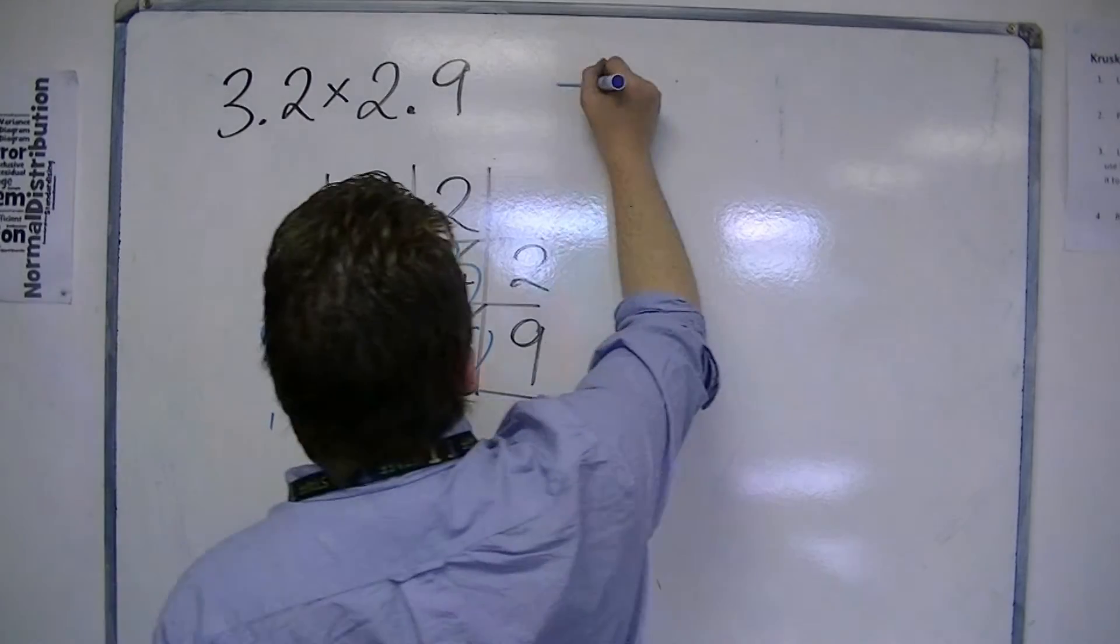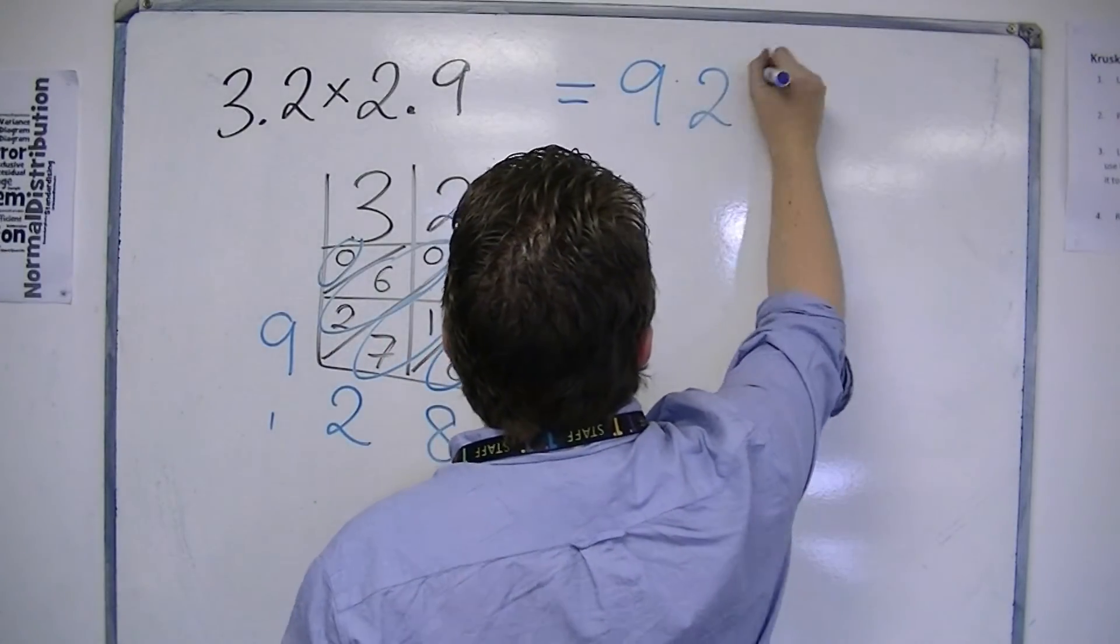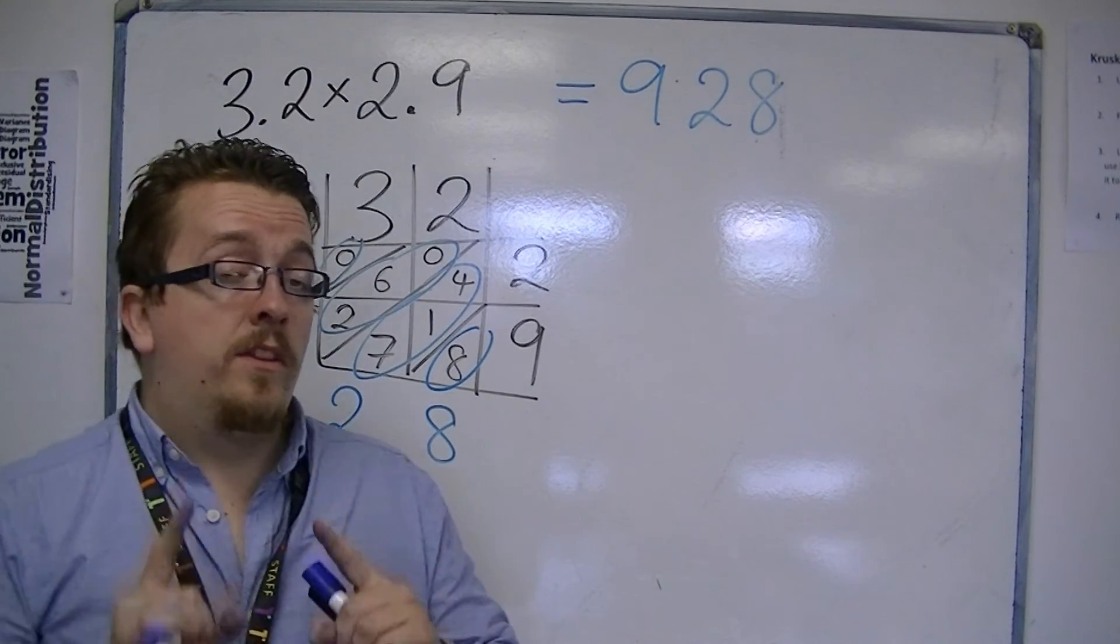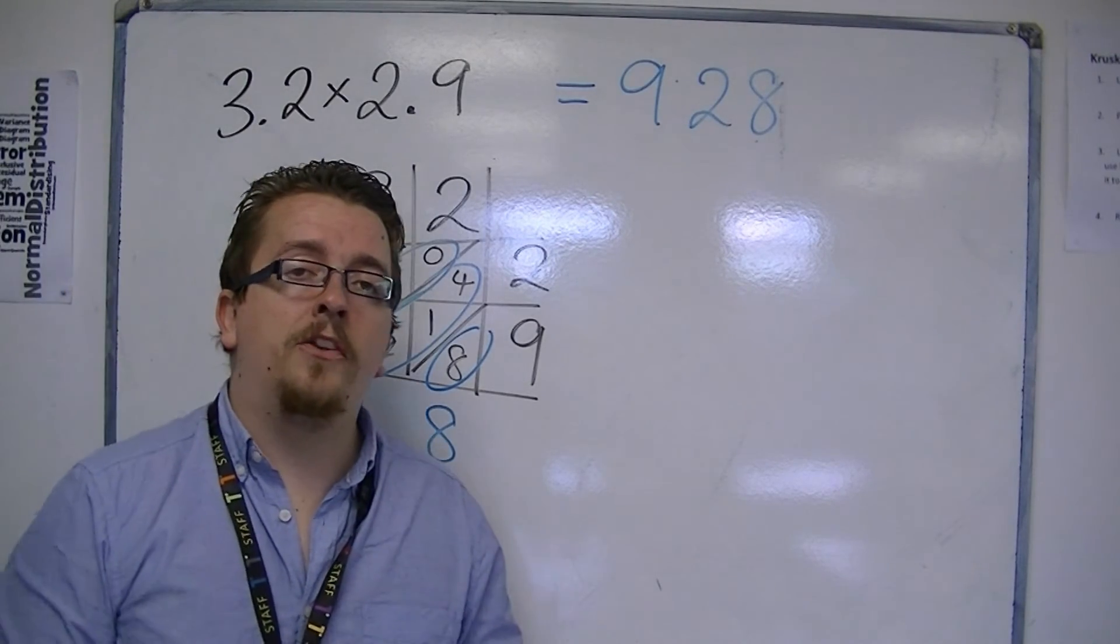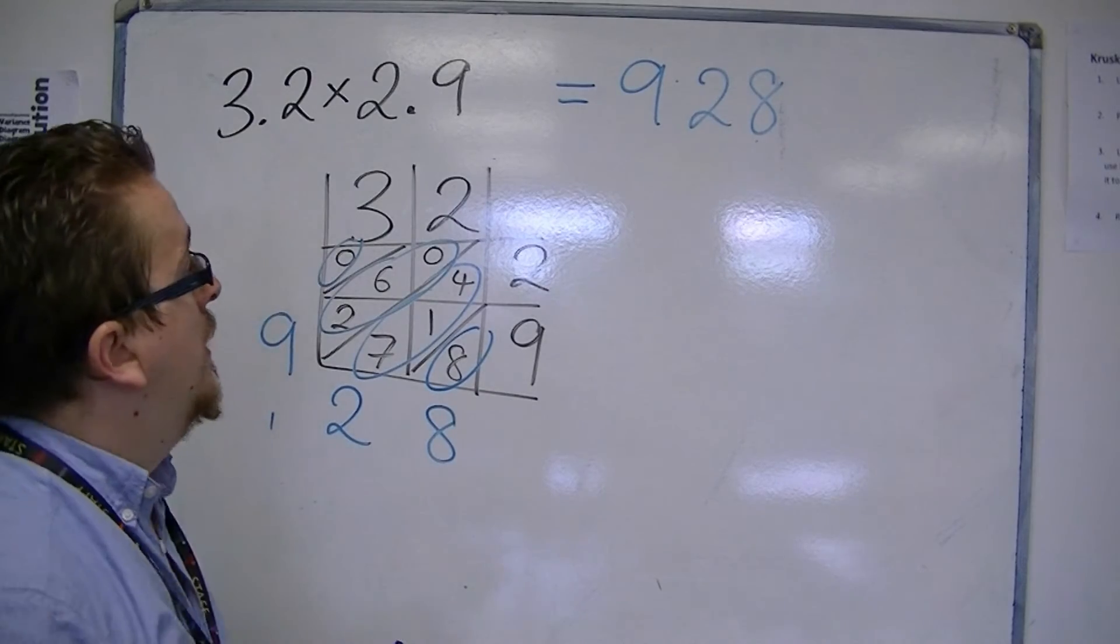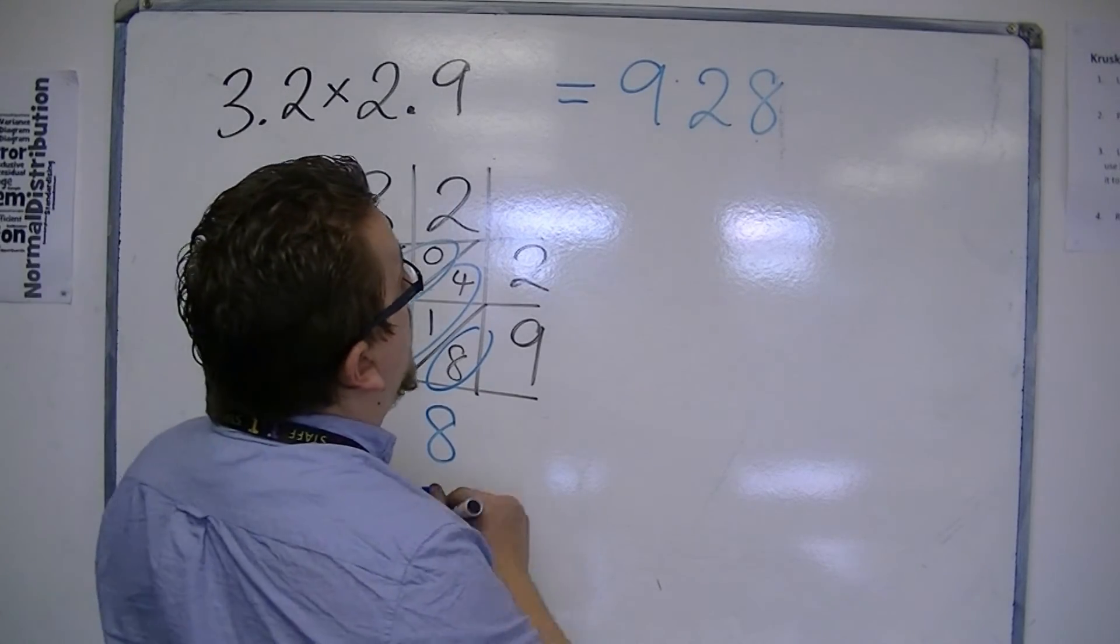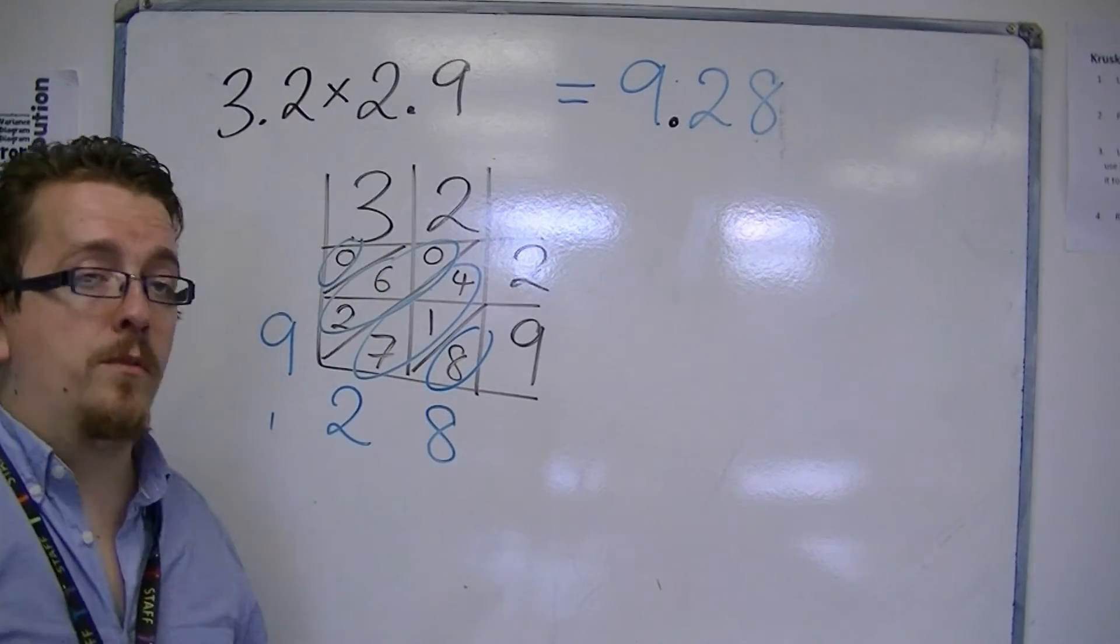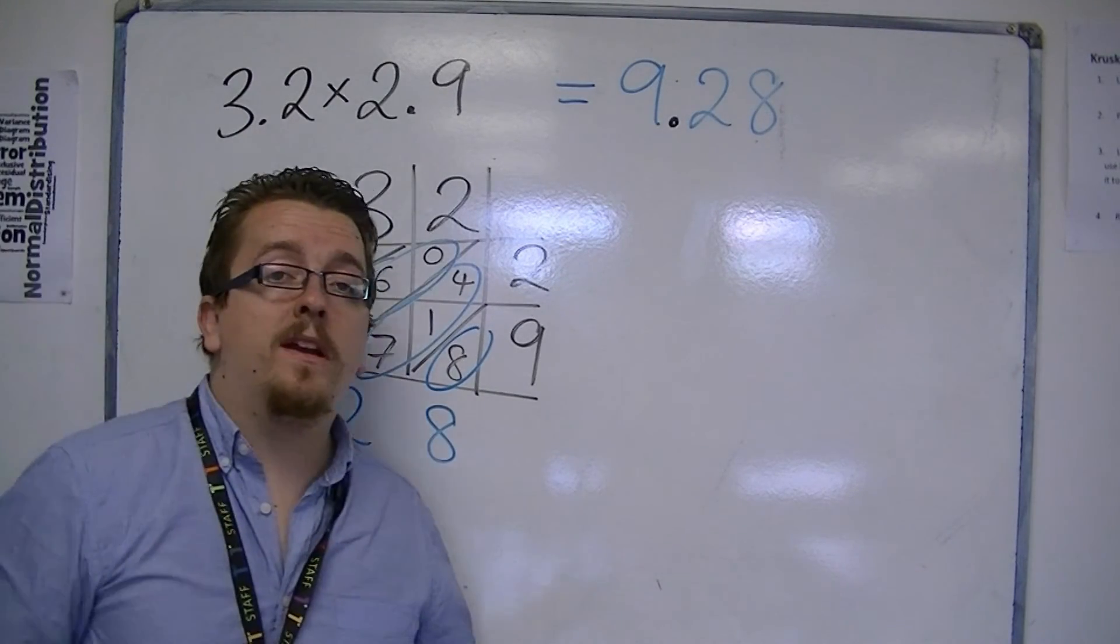So at the moment we've got 9, 2, 8. So we said beforehand that we should be getting an answer close to 9. So the decimal point must go here in order for that to be true. 9.28 is quite close to 9.